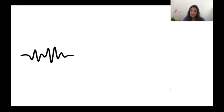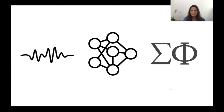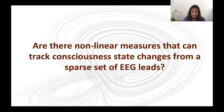There are two other metrics to be discussed in this session. One is functional connectivity — brains with diminished levels of consciousness begin to break apart functionally. Another is the ability to calculate information integration capability. The problem is that these latter two require two or more leads to assess, so they are higher-density metrics requiring more information. The question we're asking today is: are there any non-linear measures that can track consciousness state changes from a very sparse set of EEG leads — specifically just one?